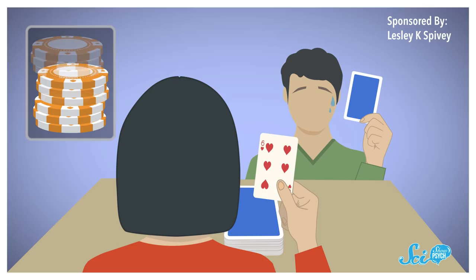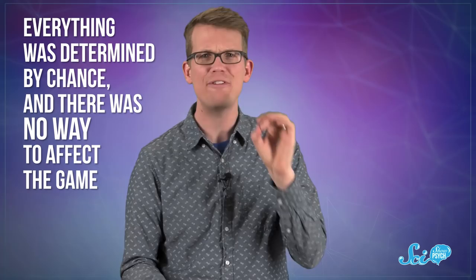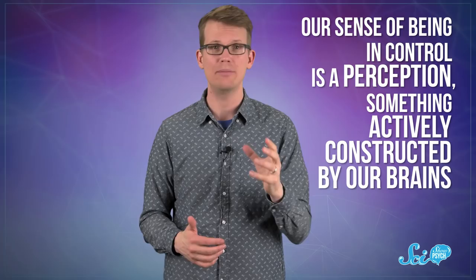Langer called this irrationally high sense of agency the illusion of control. It's just when you think you have more control than you actually do. Exactly why we do this isn't clear, but our sense of being in control isn't a strict representation of reality, it's a perception, something actively constructed by our brains. And it doesn't take much for us to link things together.